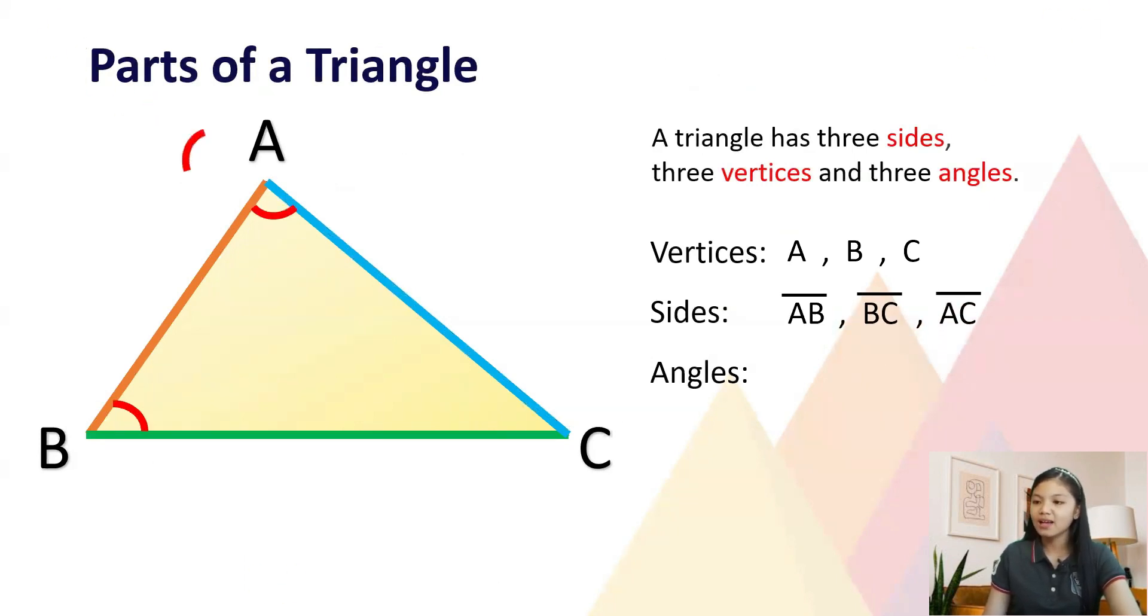Lastly, the angles are angle A, angle B, and angle C. Therefore, this triangle is named triangle ABC.